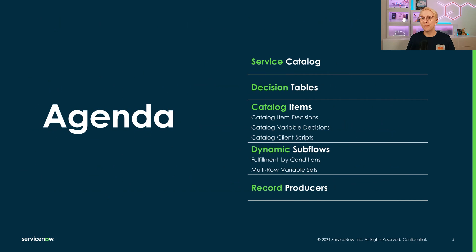So let's look at the topics for today. We'll look at Service Catalog — what it is — decision tables, catalog items using decision tables, and also dynamic subflows and a little bit of record producers.